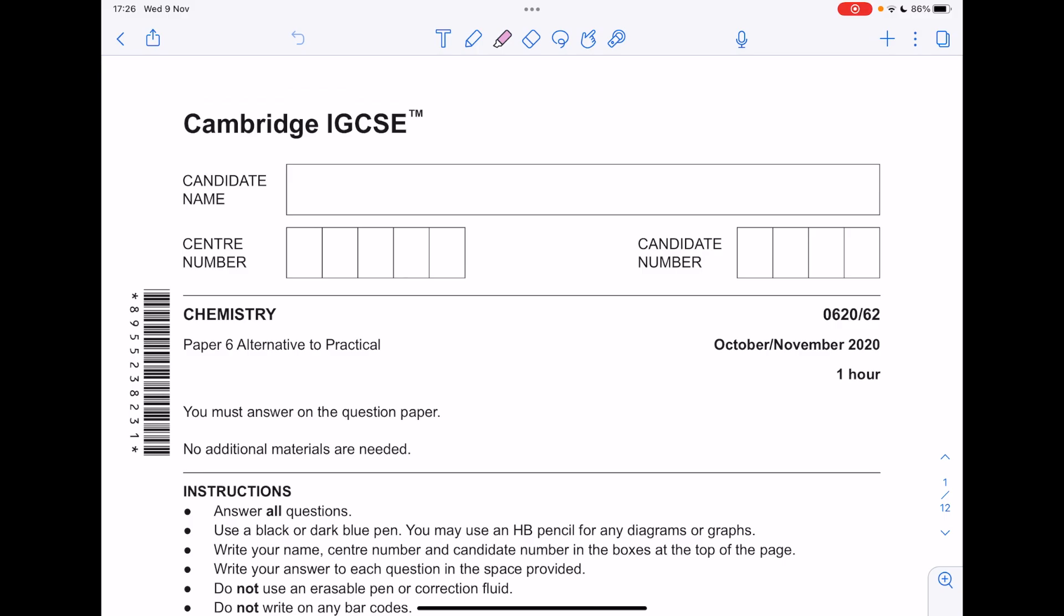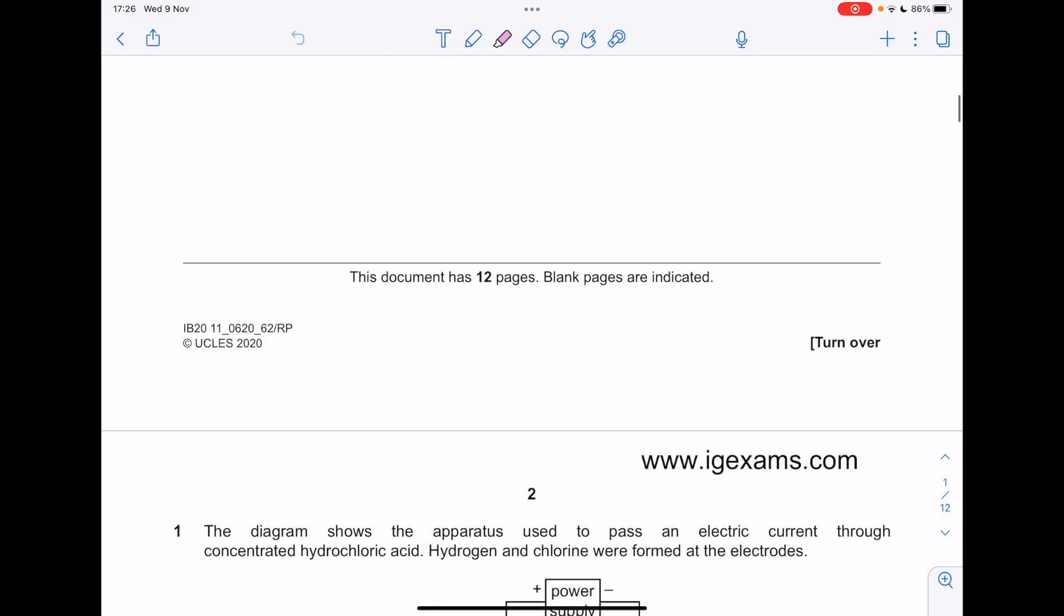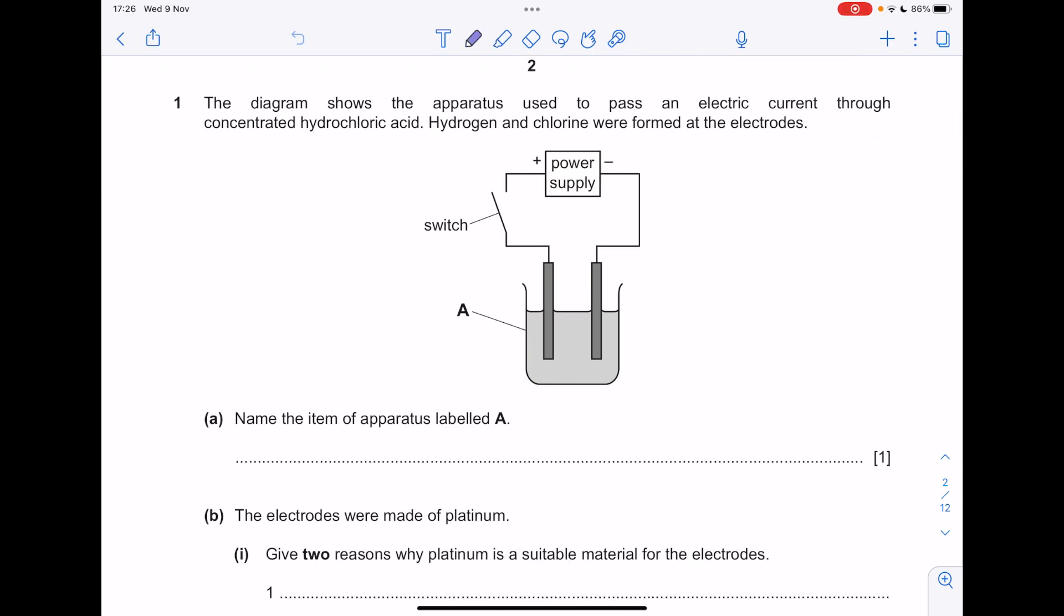This is a Cambridge IGCSE Chemistry Paper 6 Alternative to Practical talk-through. The diagram shows the apparatus used to pass an electric current through concentrated hydrochloric acid. Hydrogen and chlorine were formed at the electrodes.